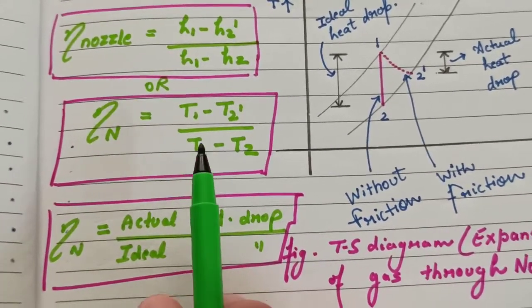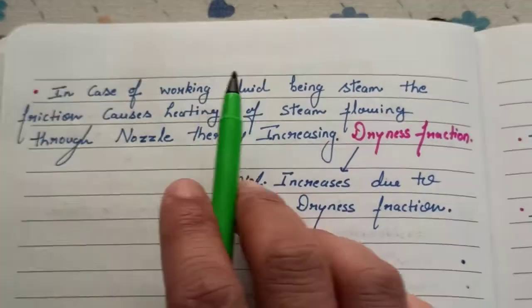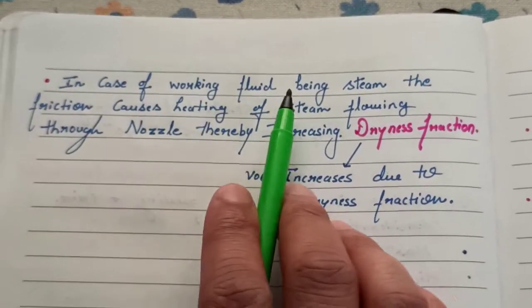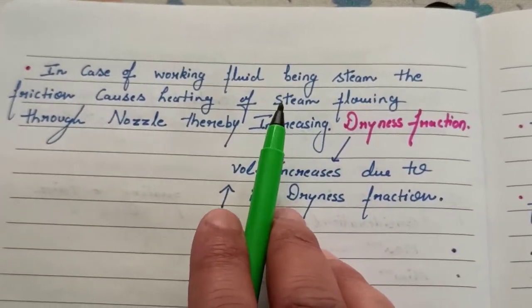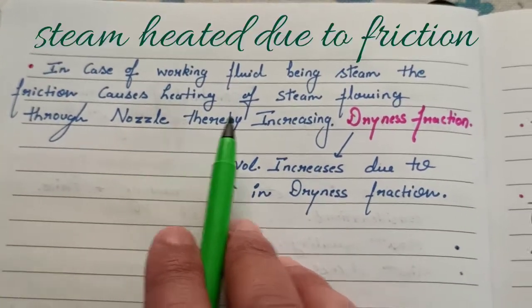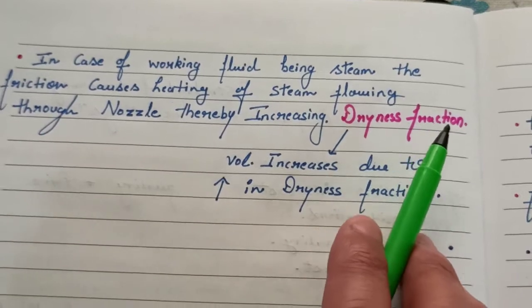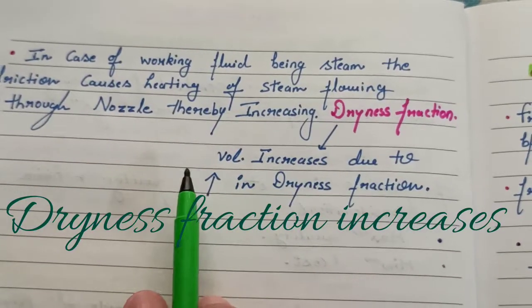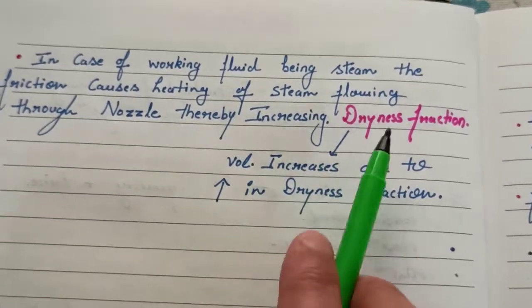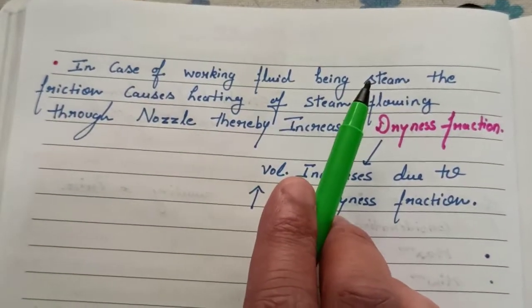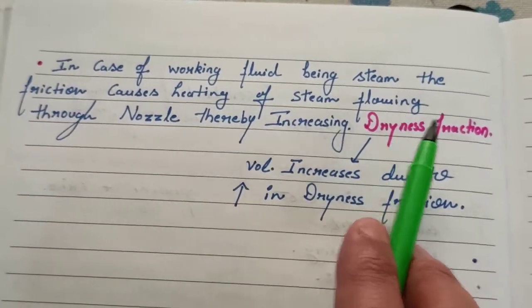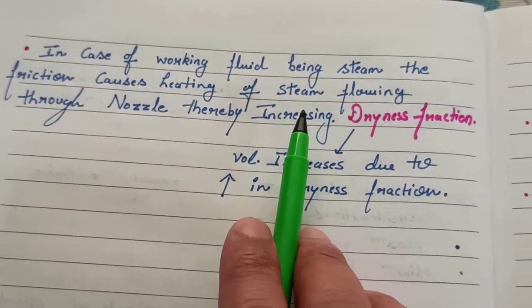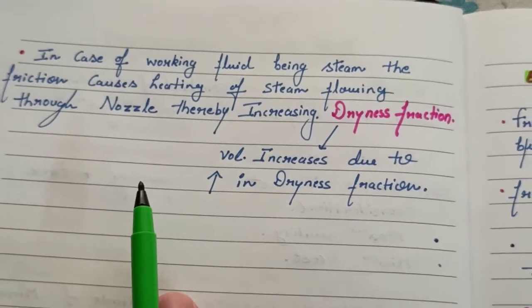In case the working fluid is steam, then the steam is also heated due to this friction which leads to increasing the dryness fraction. Due to this dryness fraction, the volume also increases. As steam passes through the nozzle, the friction causes heating of the steam which increases the dryness fraction.